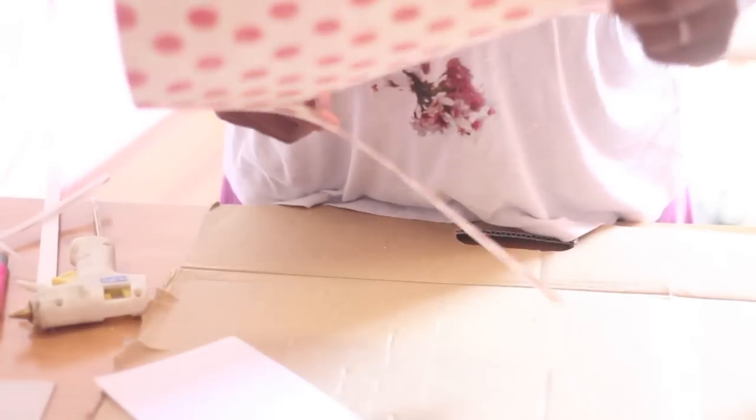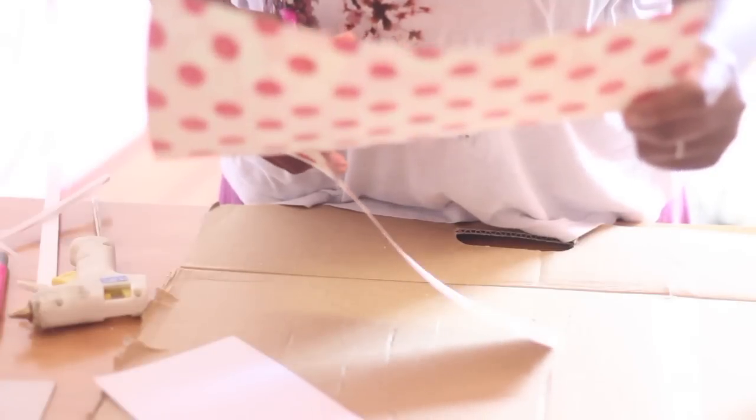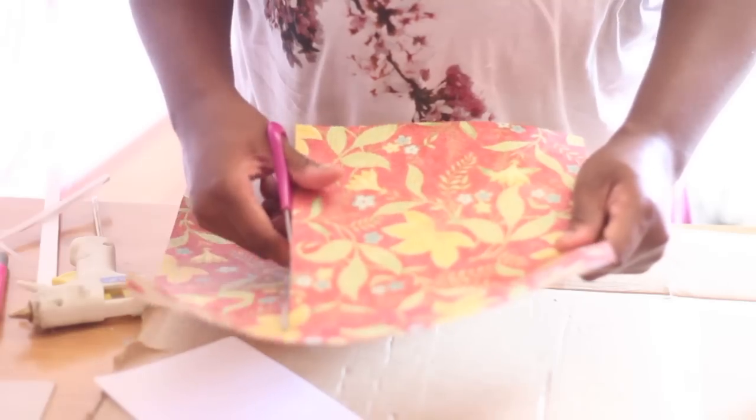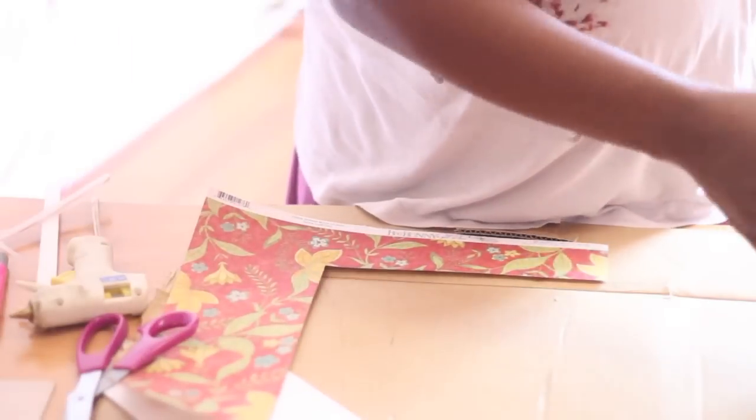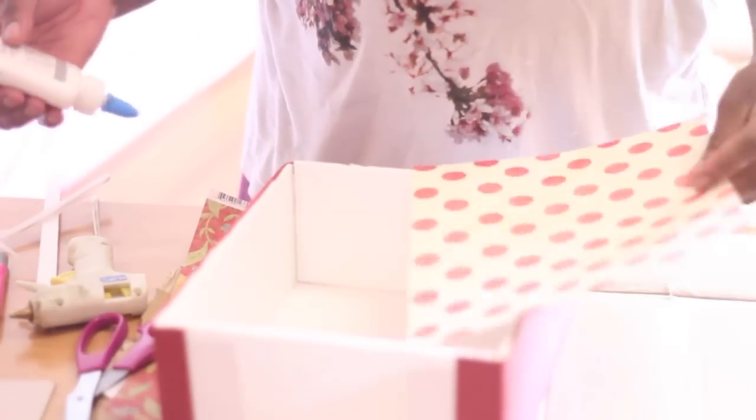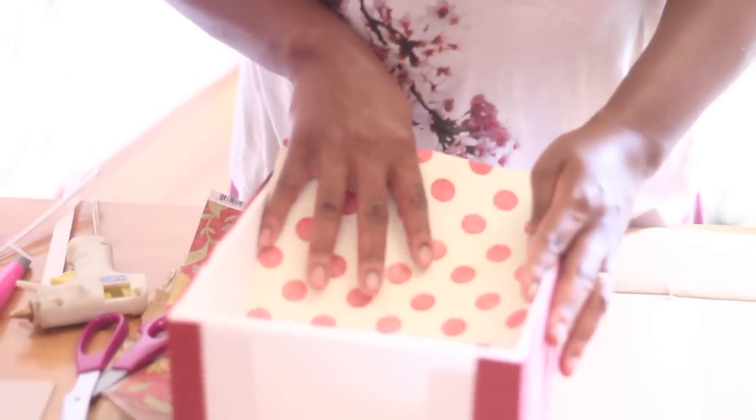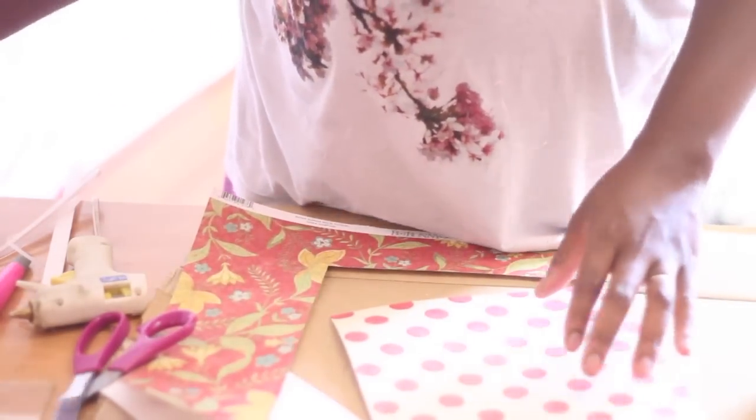So here you can see I have a cute red piece of floral scrapbook paper. And to make it fit to size, I'm using that same glass frame that I used in the beginning. Now it's not going to fit perfectly because you lost a few centimeters in your sides. However, it is a good template and you can always go back afterwards and trim off any excess.